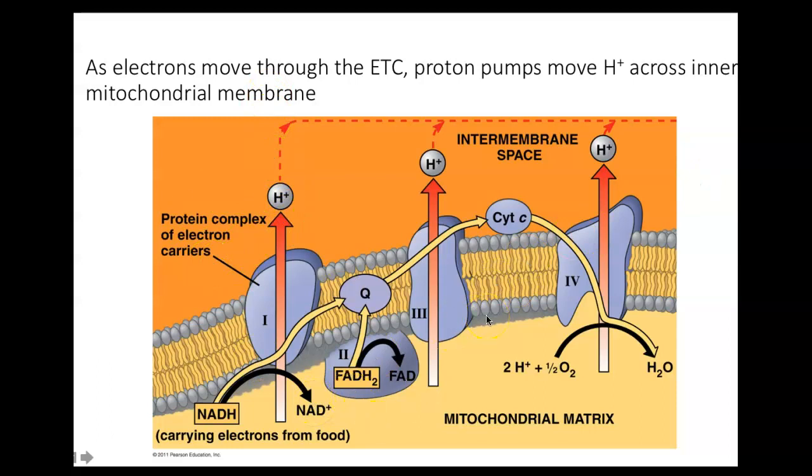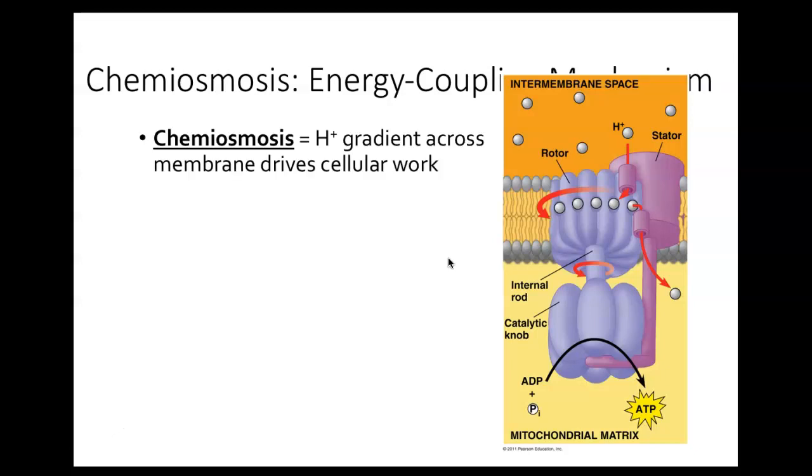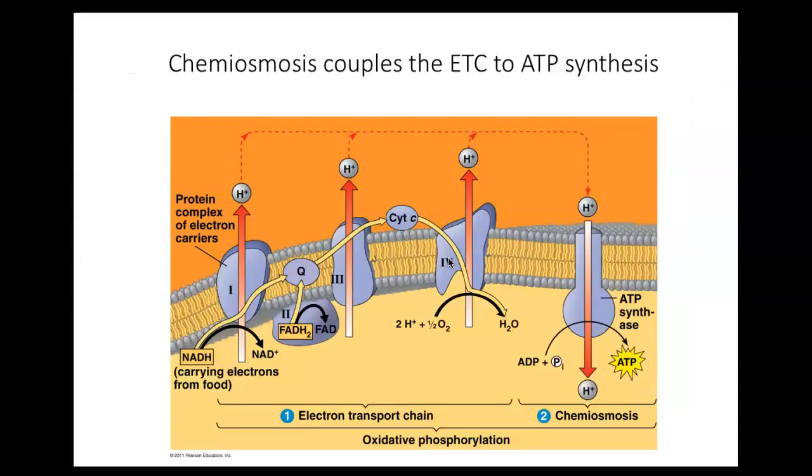NAD and FAD are dropping off the electrons, dropping off the hydrogens. As the electrons get passed from one electron carrier to another, it is causing the pumping of hydrogens against their concentration gradient. And then the hydrogens are going to find ATP synthase, and it is a process called chemiosmosis when the hydrogens diffuse through ATP synthase, turning the rotor, causing the phosphorylation of ADP. It's a very, very efficient process. It's going to make the most ATP.